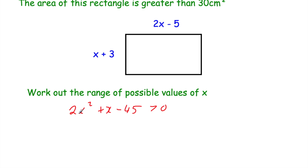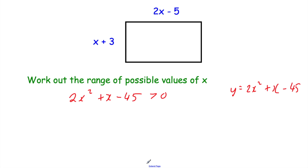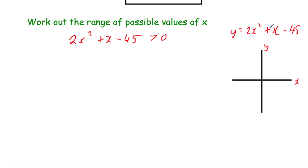I'm going to sketch the graph of y equals 2x squared plus x minus 45, and once we've sketched it we can see when that quadratic is greater than 0. To sketch it, I want to find when this quadratic crosses the x-axis, so I'll let y equal 0, giving us 0 equals 2x squared plus x minus 45, and solve that.